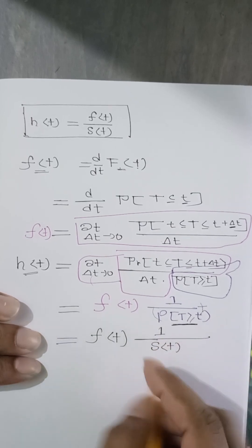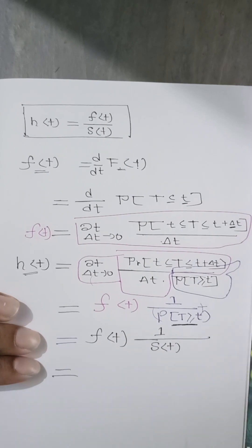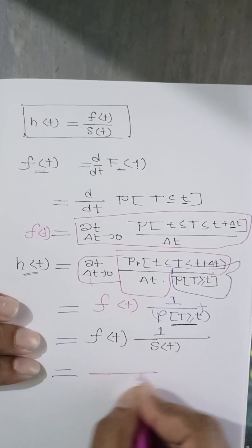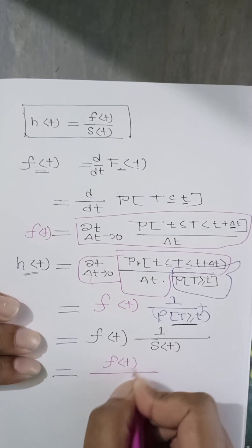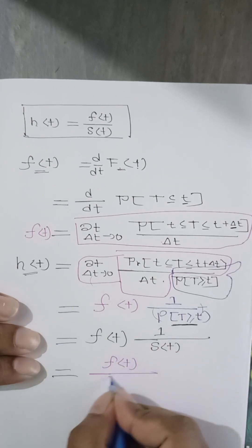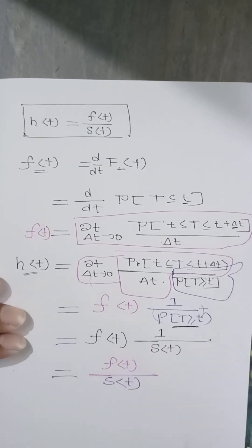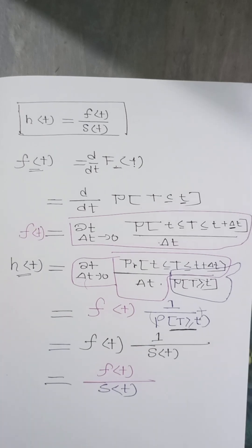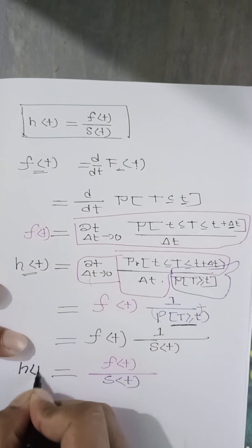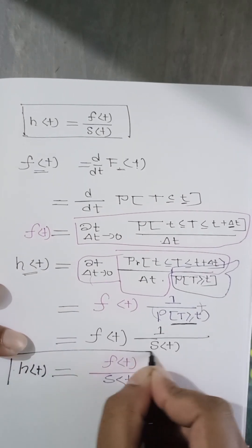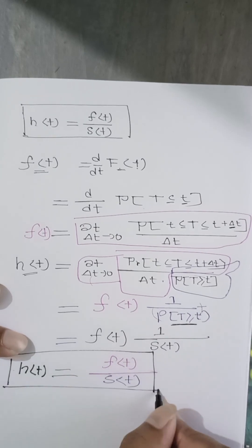So what we got ultimately, we got f of t at the denominator, we got S of t. What we wanted to find is h of t. So we derived what we wanted to derive.